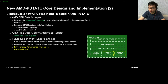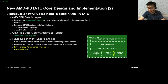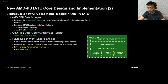In the future, we plan to implement kernel parameters to switch between different frequency management policies and customize different policies for specific products. We also plan to implement support for EPP — Energy Performance Preference — control and preferred core. The preferred core feature is for single-thread performance optimization.